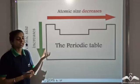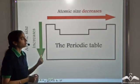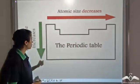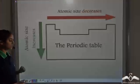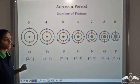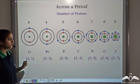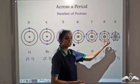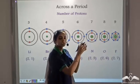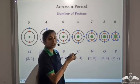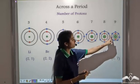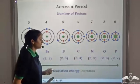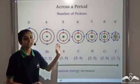Let's see how ionization energy varies in the periodic table. We know that atomic size decreases on moving from left to right in a period, and atomic size increases on moving from top to bottom in a group. When we move from left to right in a period, the atomic size decreases. That means the outermost shells are pulled with a greater force towards the nucleus, so it requires a lot of energy to remove the electrons. Therefore, ionization energy increases on moving from left to right in a period.